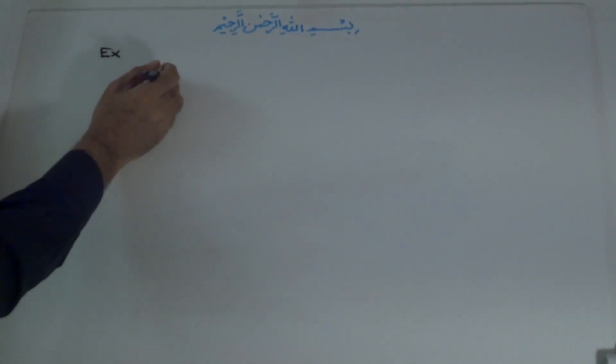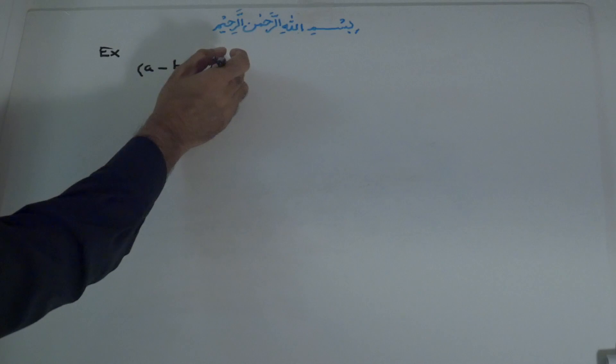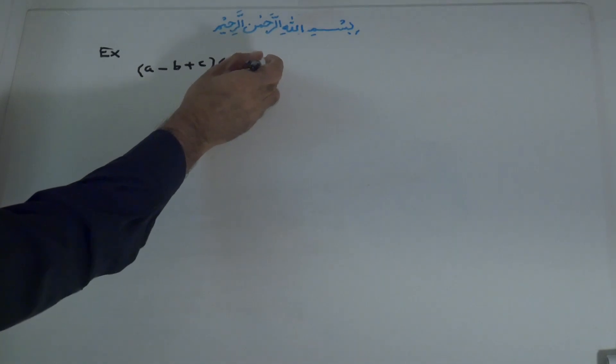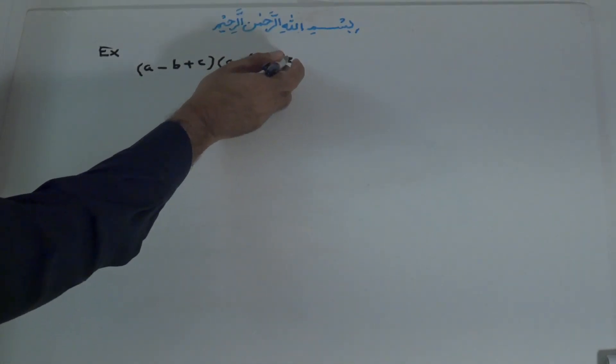Now, to use all three of these identities, I'll show you one or two more examples. Example: a minus b plus c, times a plus b plus c.